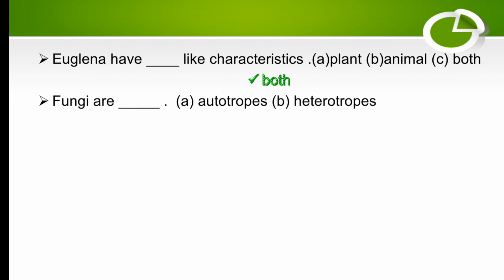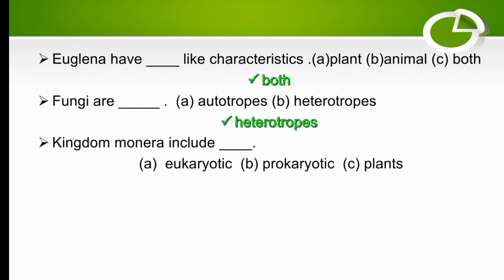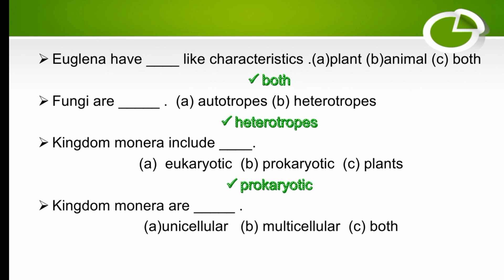Fungi are heterotrophs — they cannot prepare their own food. Kingdom Monera includes prokaryotes — the right option is prokaryotes.